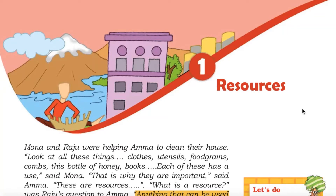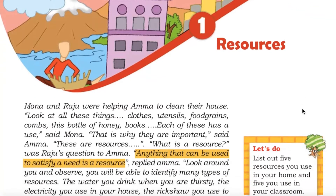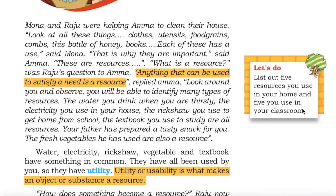Chapter 1: Resources. Mona and Raju were helping Amma to clean their house. Look at all these things — clothes, utensils, food grains, combs, this bottle of honey, books. Each of these has a use, said Mona. That is why they are important, said Amma. These are resources.